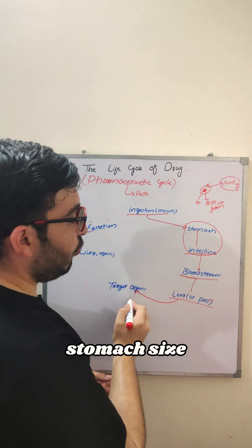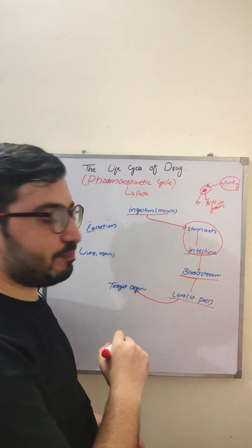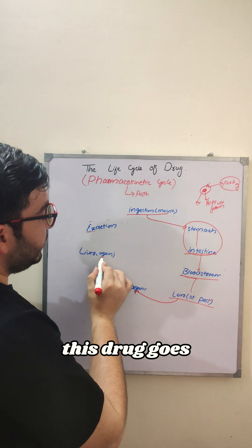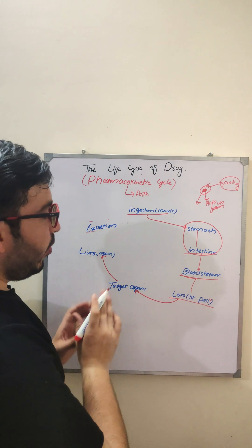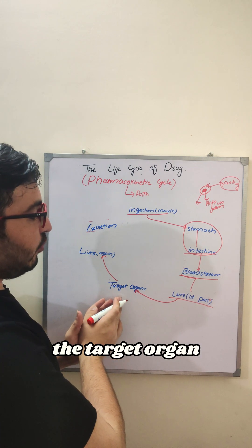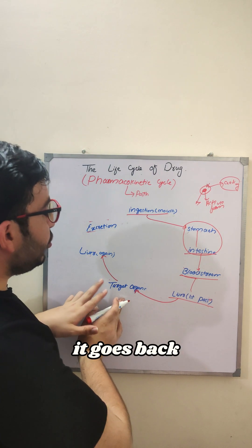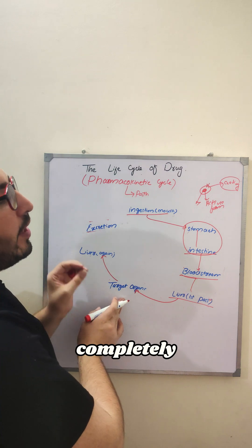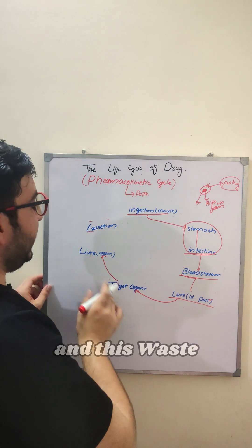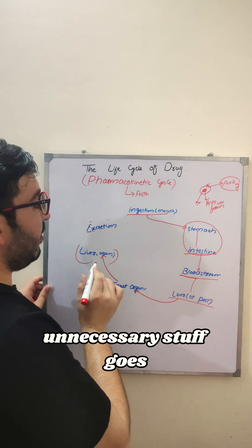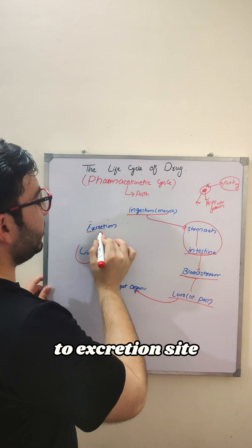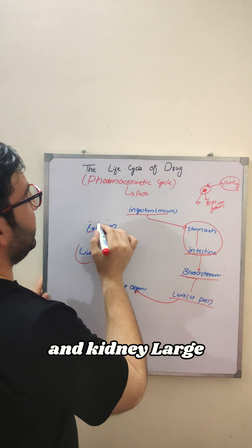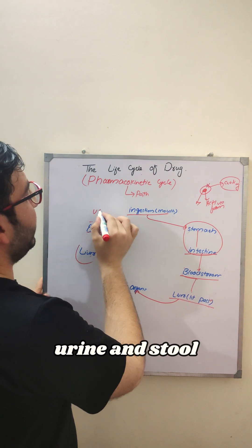The active form of the drug then reaches the target site. Once the drug has done its job at the target organ, it goes back to the liver, where it is completely broken down into waste products. This unnecessary waste then goes to the excretion site — for example, the kidney — and is removed from the body in the form of urine.